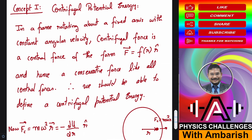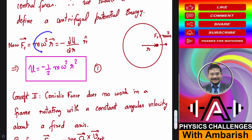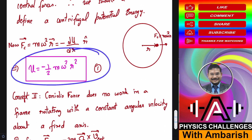All central forces are conservative, so we can define a potential energy for the centrifugal force. Since force equals the negative derivative of potential energy, and centrifugal force is Mω²R, we get centrifugal potential energy U = −½Mω²R². You simply integrate R dR to get R²/2. I'll use this result directly from here on — the integration used is trivial.